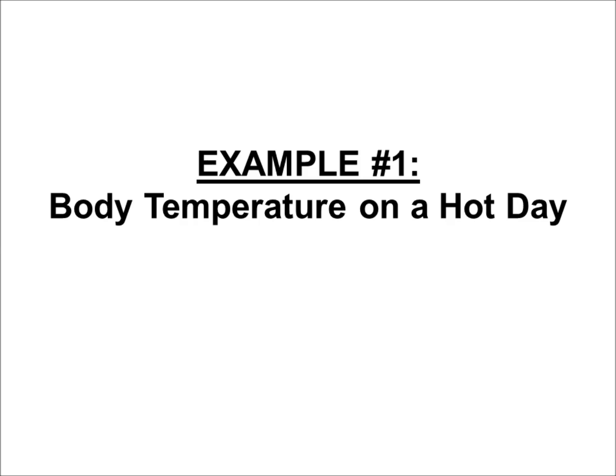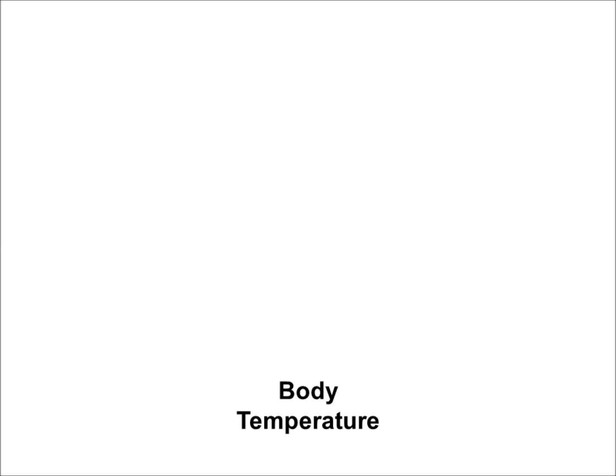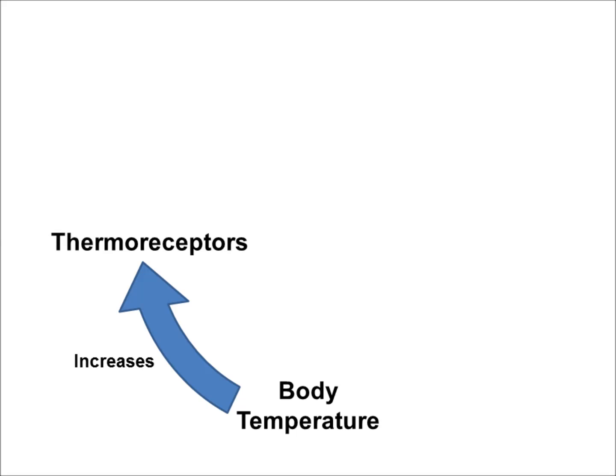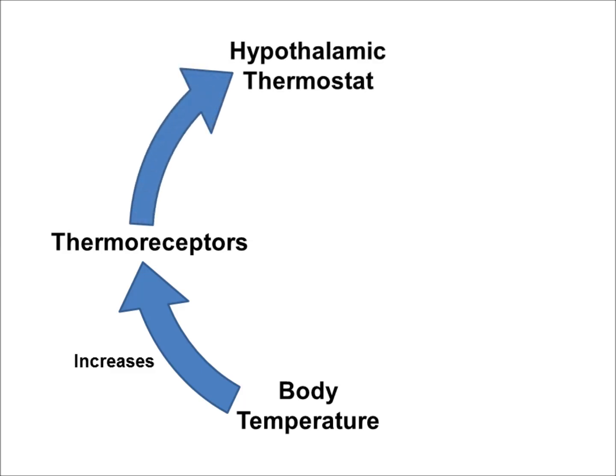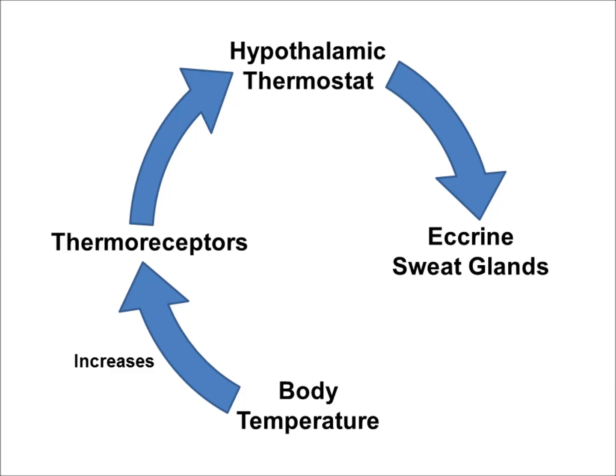Let's talk through two simple examples. The first involves your body temperature on a hot day. Your body temperature is going to increase when you go outside on a hot day — heat is either not leaving your body fast enough or possibly even entering it, so your body temperature rises. Thermoreceptors in your body detect that change and communicate with the hypothalamic thermostat. The hypothalamus in the brain sets body temperature and determines from input from the thermoreceptors that temperature is too high. So the hypothalamic thermostat responds by communicating with eccrine sweat glands, which produce sweat on the surface of the skin. As that sweat evaporates, it has a cooling effect, facilitating heat transfer out of the body and thereby decreasing body temperature.